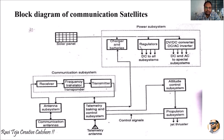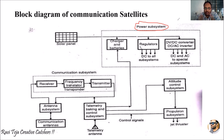The first segment is the solar panel, which is connected to a power subsystem. The power subsystem plays a major role in the satellite — without power, the satellite won't work. Satellites are integrated with several batteries, and these batteries are connected to the solar panels on the outer body of the satellite.